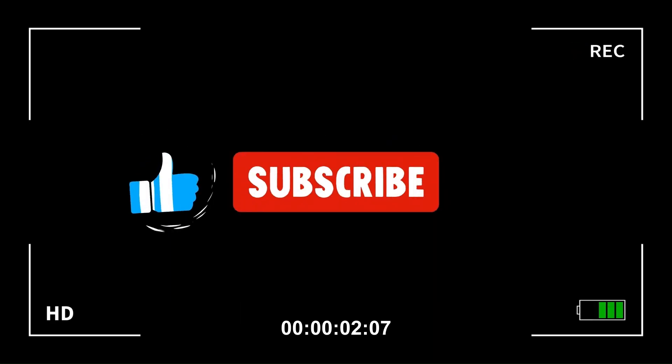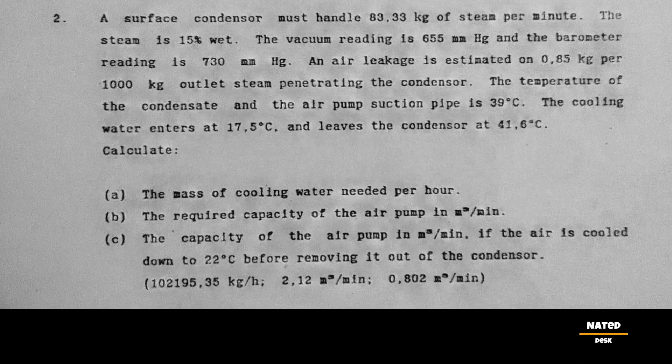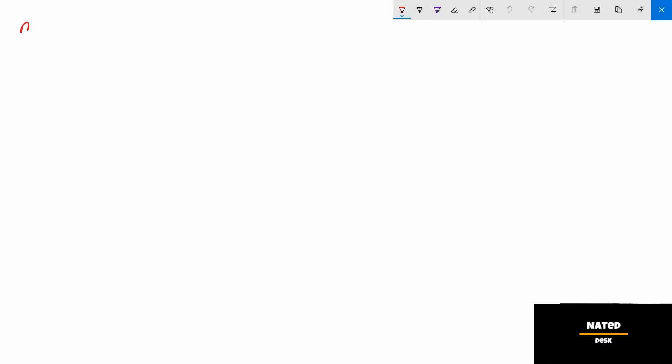If you're new here, please subscribe and like for more videos. The question reads: a surface condenser must handle 83.33 kg of steam per minute. The steam is 15 percent wet. The vacuum reading is 655 mm mercury, barometer reading is 760 mm mercury, and air leakage is estimated at 0.85 kg per thousand kg of outlet steam penetrating the condenser. The cooling water enters at 17.5°C and leaves the condenser at 41.6°C.